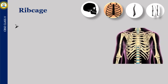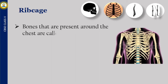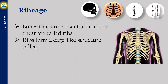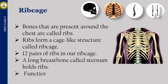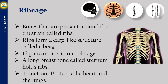The bones present around the chest are called ribs. Ribs form a cage-like structure called ribcage. There are 12 pairs of ribs in our ribcage. A long breast bone called sternum holds the ribs. Function: protects the heart and the lungs.